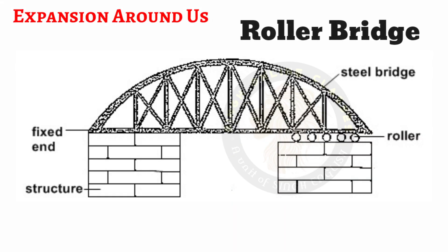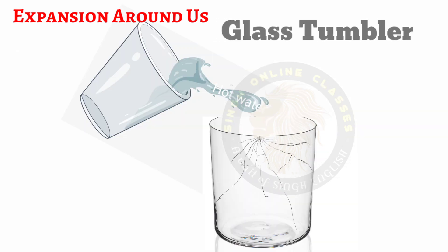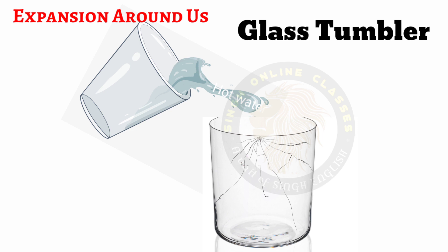Similarly, in steel bridges, one end is made to rest on rollers with enough space to provide for expansion during summer. When very hot liquid is poured into a glass tumbler, the tumbler sometimes cracks. This happens because the inner wall gets heated first and expands, but the outer wall remains at normal temperature and does not expand.